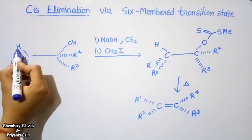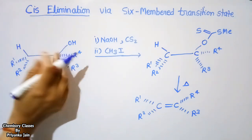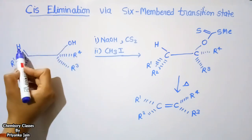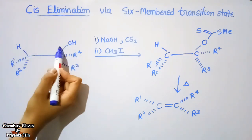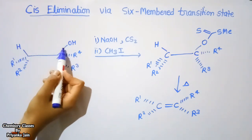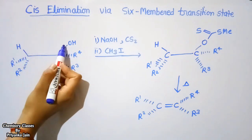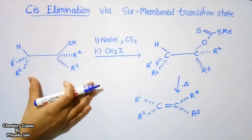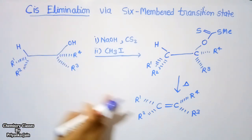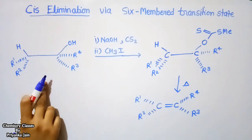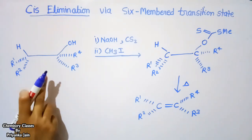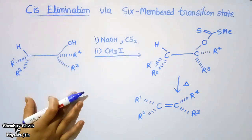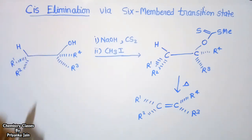We can see that the H and the OH group both leave from the same side. So it is called the cis elimination process because they should be in the same plane for the elimination. We are getting the olefin that has the same configuration as that of the alcohol, and both leaving groups are eliminated from the same site.